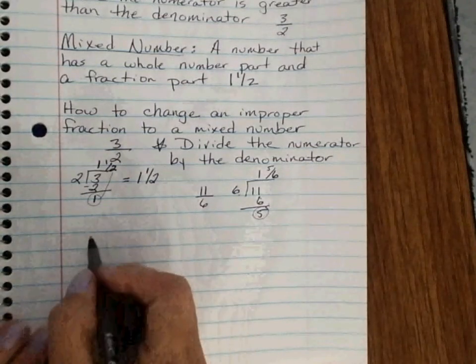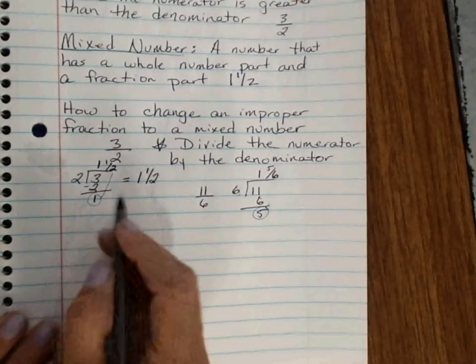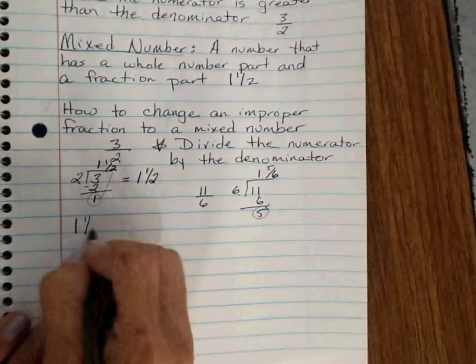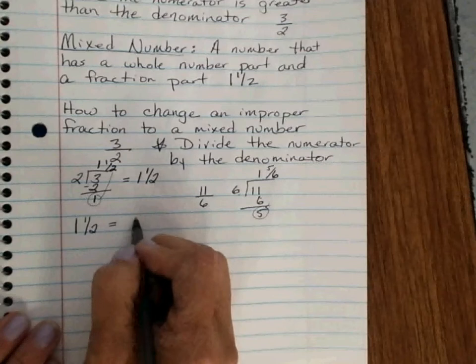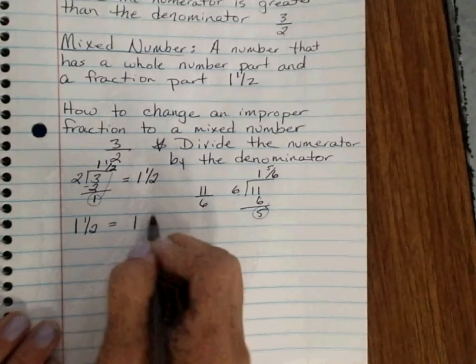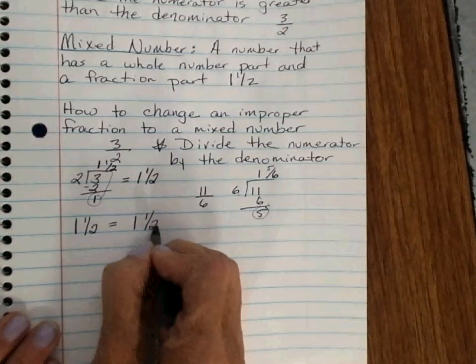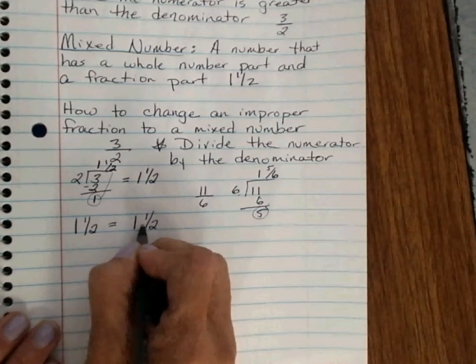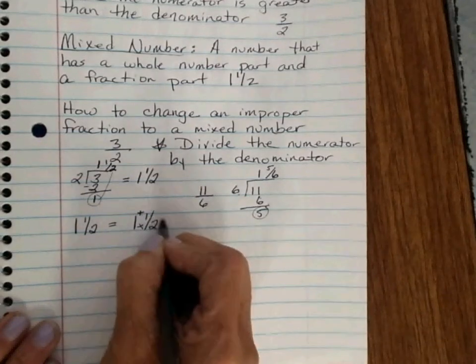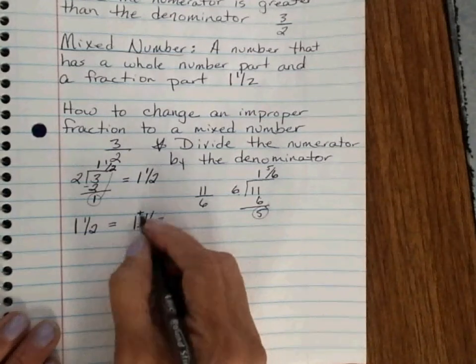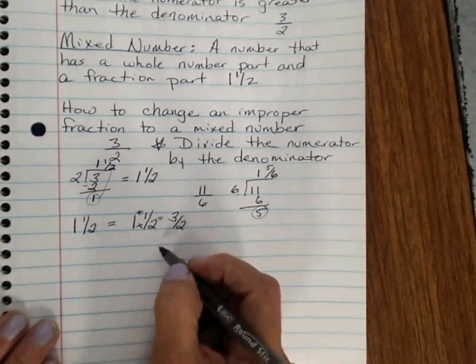Now if we wanted to go the other way and change our mixed number into an improper fraction. Let's say 1 and 1 half. We're going to turn it back into an improper fraction. We're going to multiply 2 times 1 is 2 plus this 1 makes 3. So it's 2 plus 1 is 3 over 2. We just go backwards.